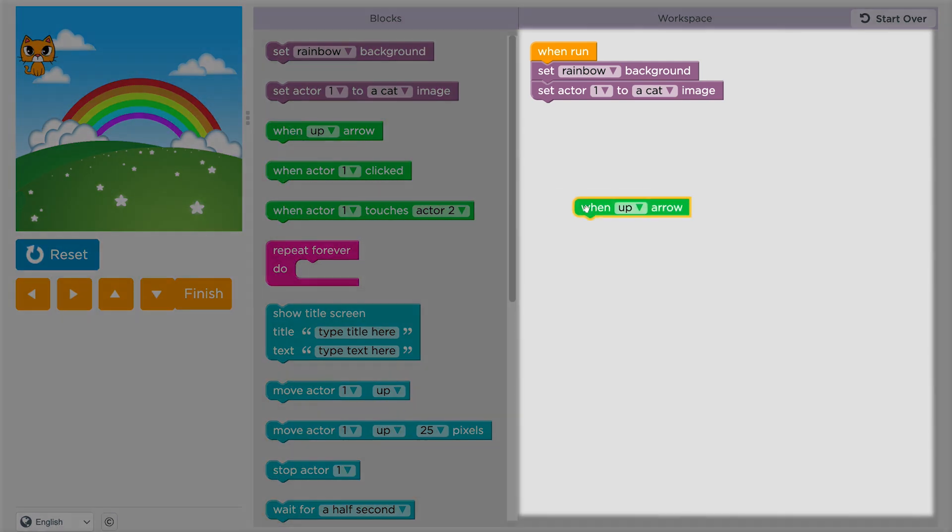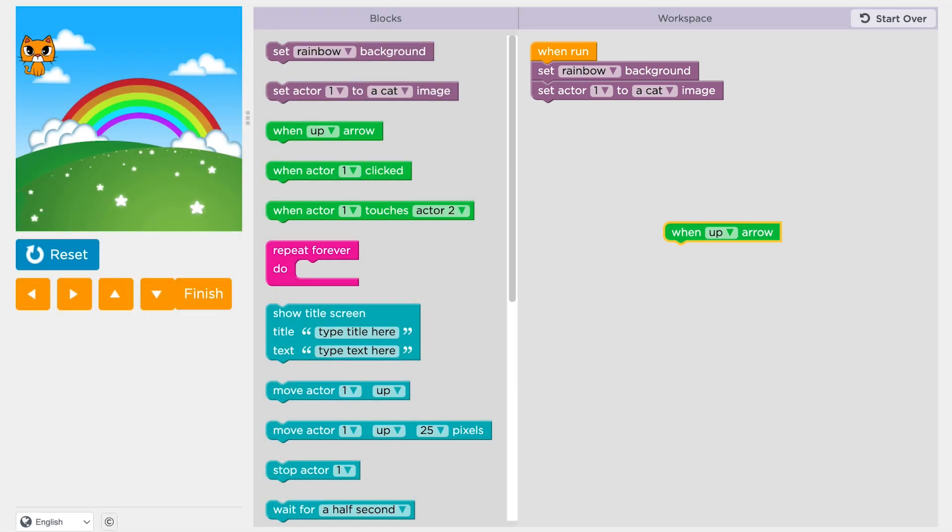Event blocks can go anywhere in your workspace. They never connect to the when run block, so it's okay to leave them off to the side.